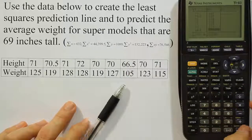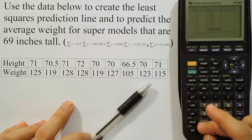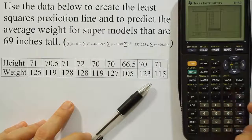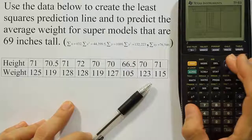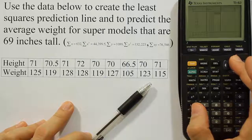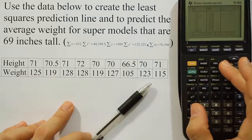105, 123, and 115. Okay, so now all my weights are in the calculator as well. So I have the heights and I have the weights.